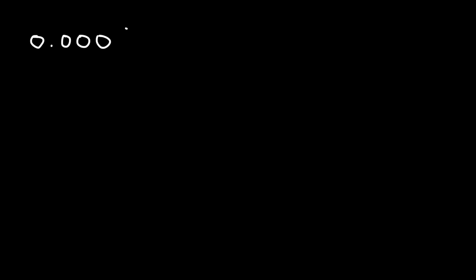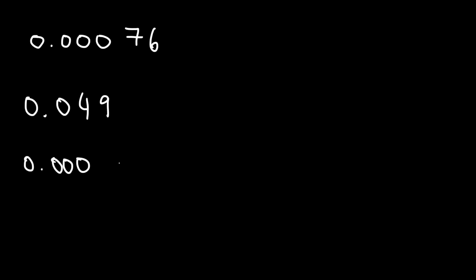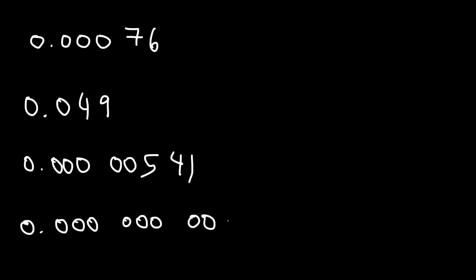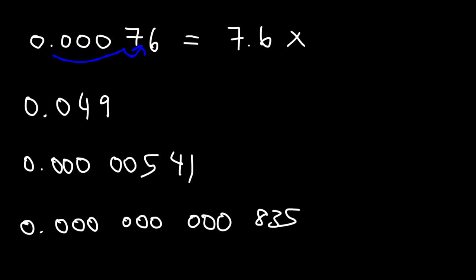Here are some more examples. The first number — moving the decimal 4 units to the right — gives us 7.6 times 10 to the negative 4. Anytime you have these decimal values, it's going to have a negative exponent associated with the scientific notation number.